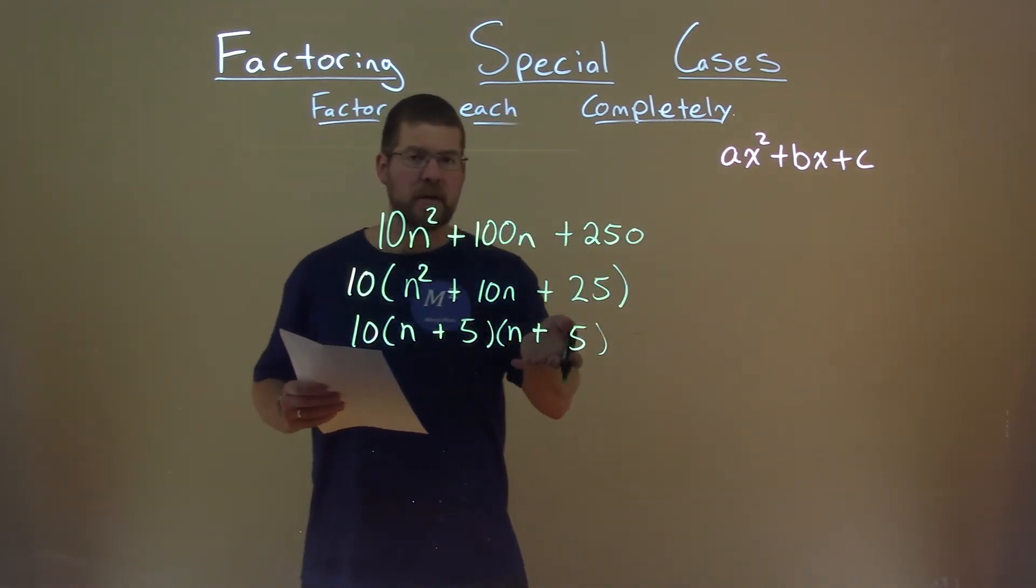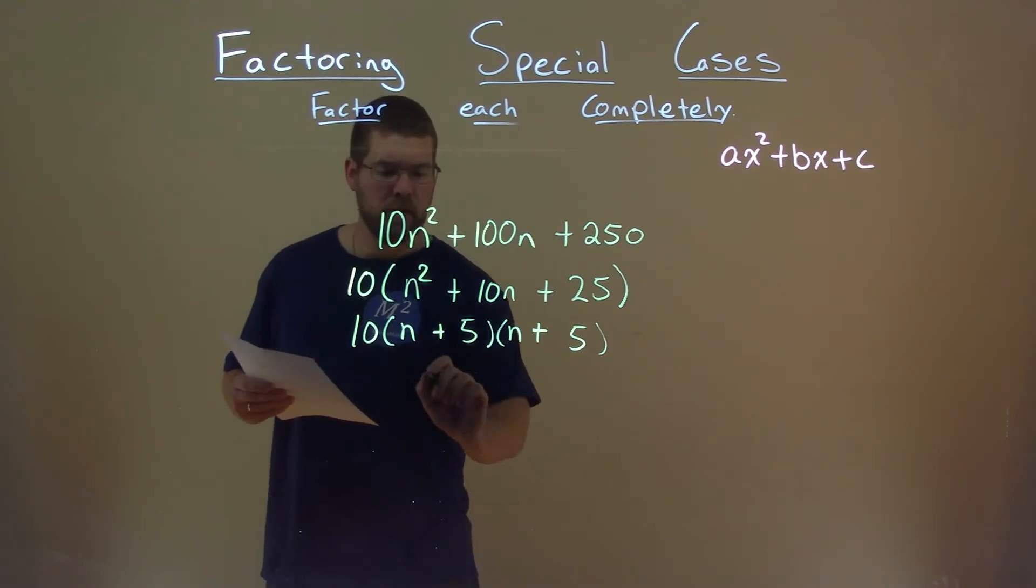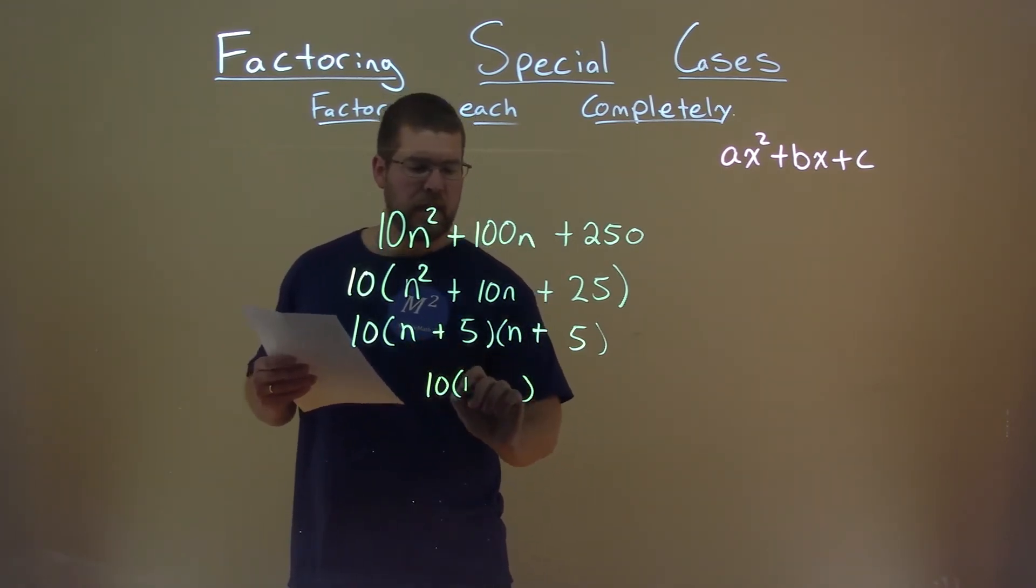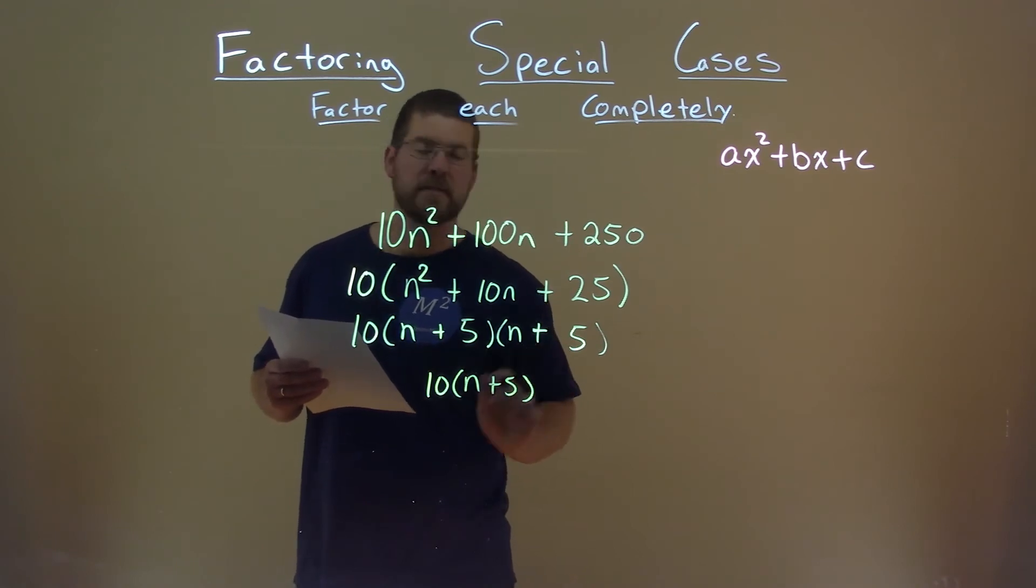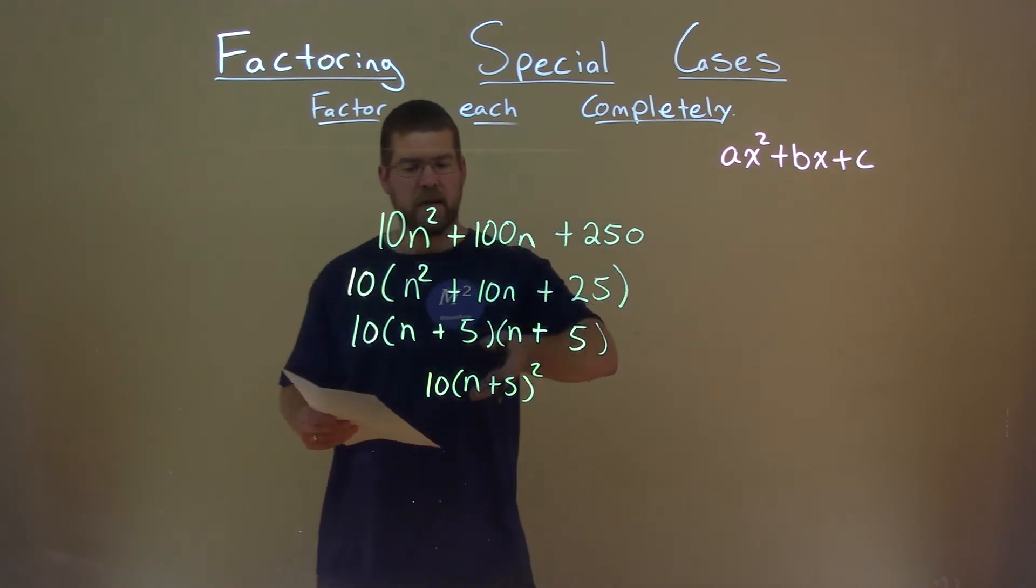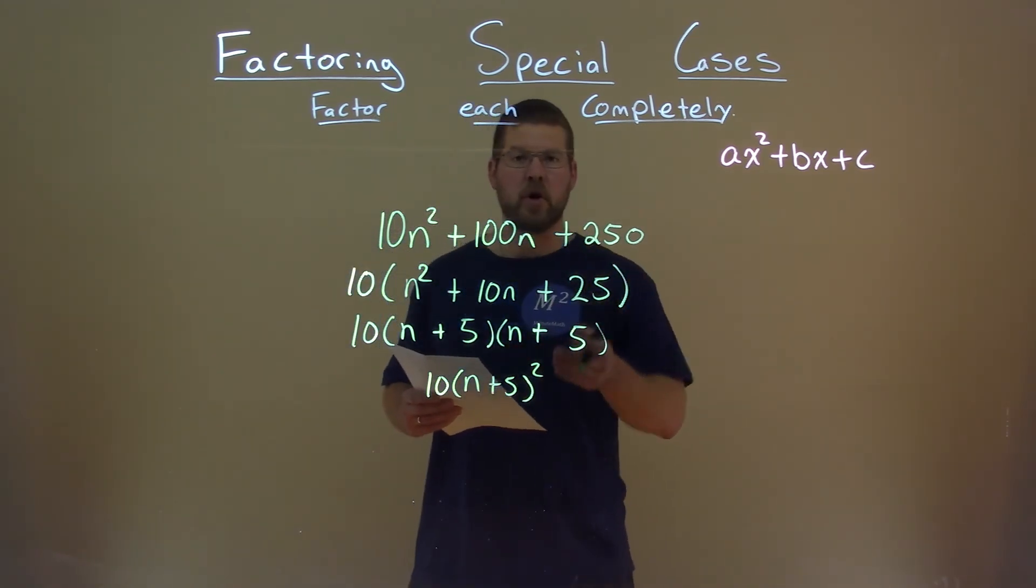So we're pretty much good here, but we still can simplify a little more. Bring down this 10, and notice that this n plus 5 is multiplied by itself, so we can write this as squared. So now we have our final answer: 10 times n plus 5 all squared.